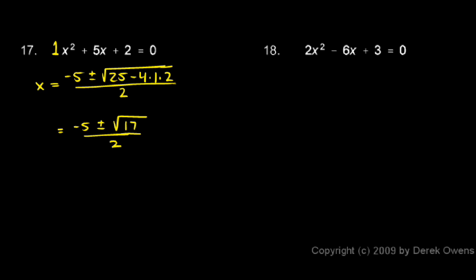Number 18. We can see that a is equal to 2, b is equal to negative 6. Don't forget the negative sign. And c is equal to 3.